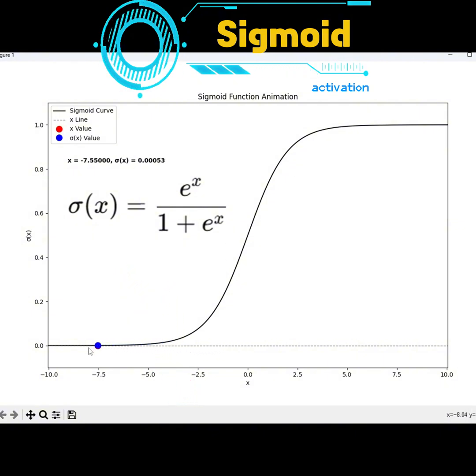The smooth gradient of the sigmoid function also helps during training, as the gradient can be calculated at any point on the curve, which is essential for backpropagation in neural networks.